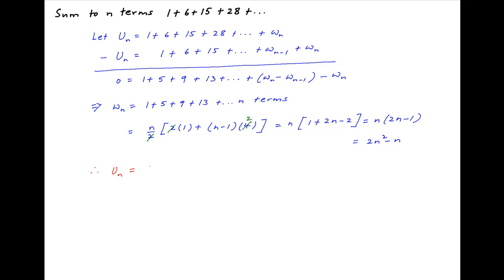Therefore, un is equal to the summation of the general term wk where k goes from 1 to n. This is equal to the summation k going from 1 to n, 2k square minus k, which is equal to 2 times summation k square minus summation k where k goes from 1 to n.